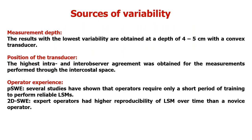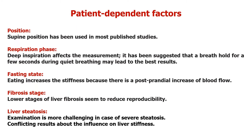Sources of variability include measurement depth — results with the lowest variability are obtained at a depth of 4–5 cm from the transducer. The transducer should be positioned in the intercostal space and perpendicular to the liver. Operator experience is very important, especially when performing two-dimensional shear-wave elastography. Patient position — supine — is used in most published studies.